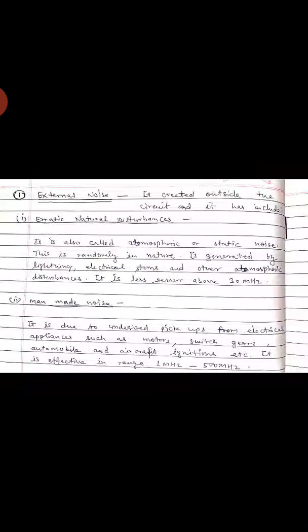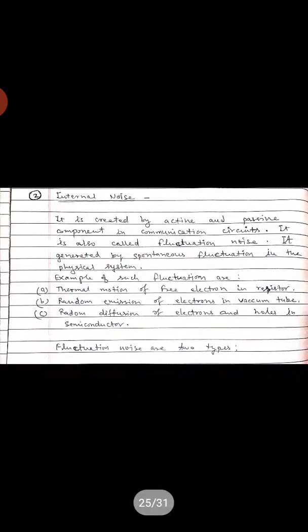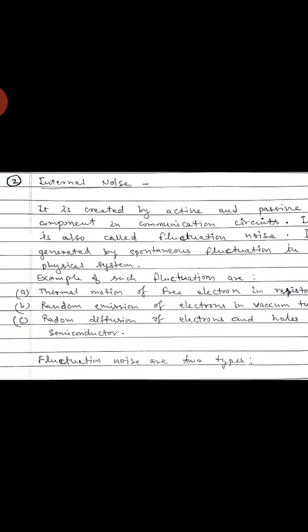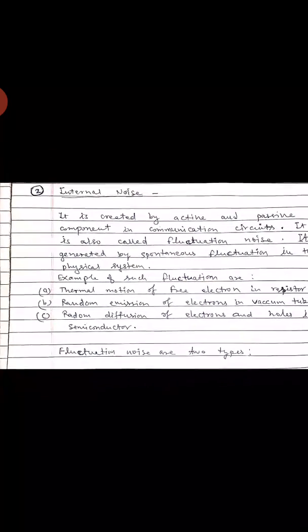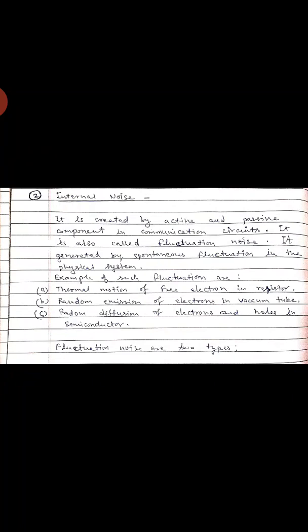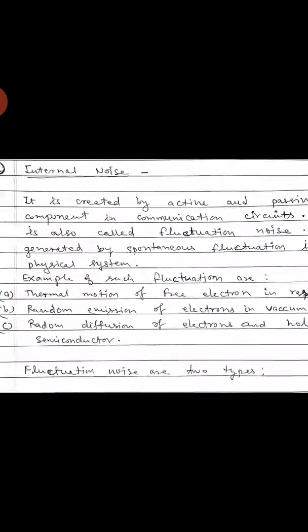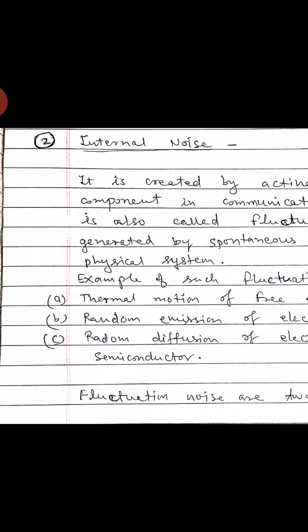Internal noise is created by active and passive components in the communication circuits. It is also called fluctuation noise, as some spontaneous fluctuations are generated in physical systems. Examples of such fluctuations include: the thermal motion of free electrons, the random emission of electrons, and the random diffusion of electrons and holes in semiconductors.